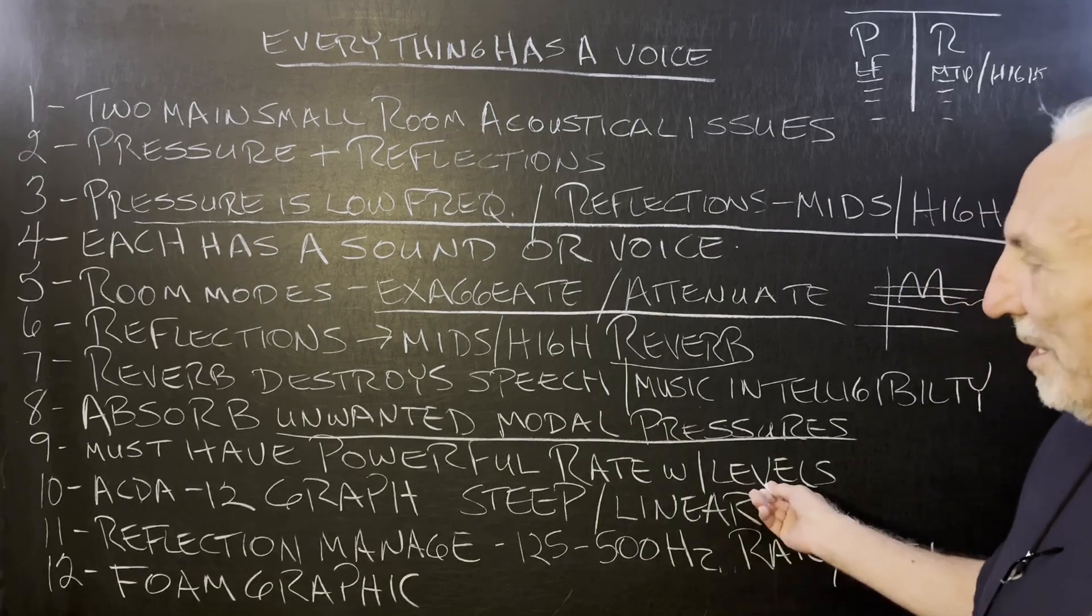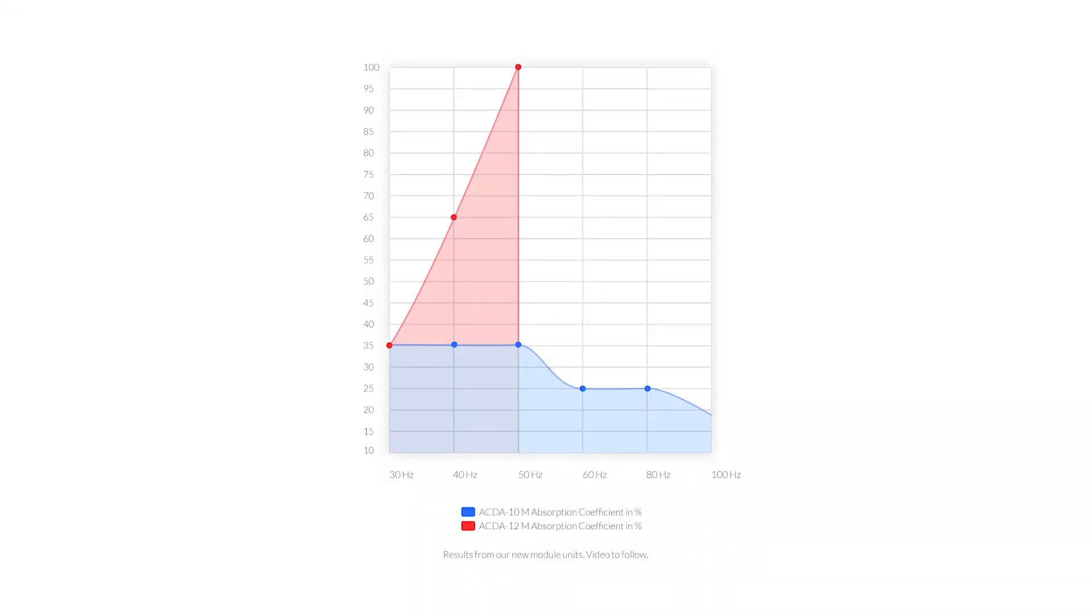Look at the great rates and levels on the ACDA here. You won't find a low frequency absorber that does any better than that. That's a 230 pound unit. Can't throw it over your shoulder and carry it out of the room. It's not a tube. It's a real low frequency pressure technology with our carbon technology inside to increase the rate of absorption. Look at the rate. Look at the steep curve there. You can see it.